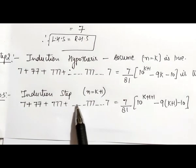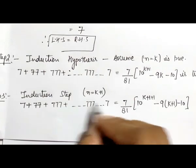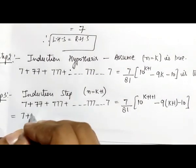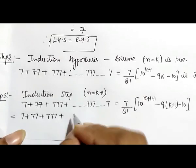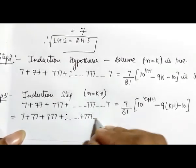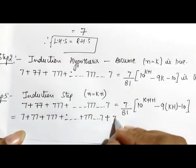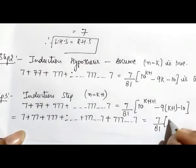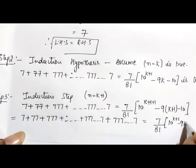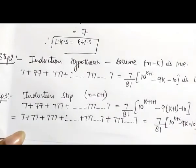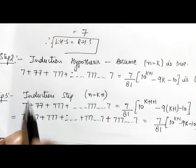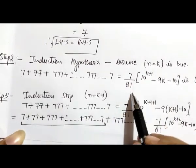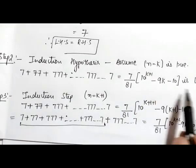On the left hand side, this series continues and always ends with 7. So we can write it as (7 + 77 + 777 + ... + 777...7) plus 777...7 = 7/81 × (10^(k+2) - 9k - 10). Now the part from the beginning up to the second-to-last term is equal to 7/81 × (10^(k+1) - 9k - 10) by step 2, so we substitute this value from step 2 into step 3.